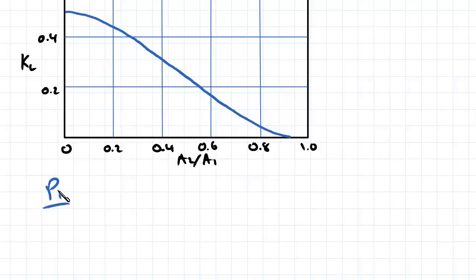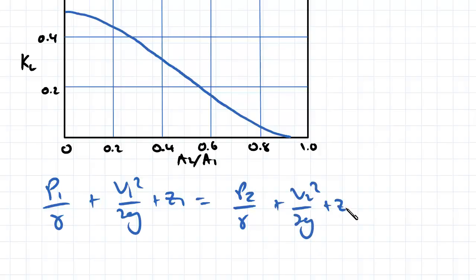So pressure 1 divided by gamma plus v1 squared over 2g plus z1 is going to be equal to pressure 2 divided by gamma plus v2 squared divided by 2g plus z2 plus our head loss due to minor effects, kl v2 squared over 2g. So kl is that loss coefficient.